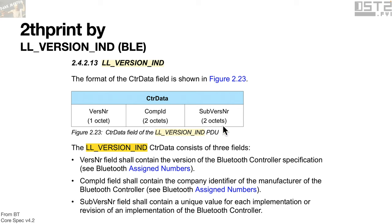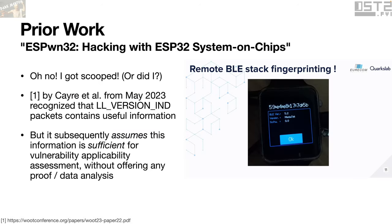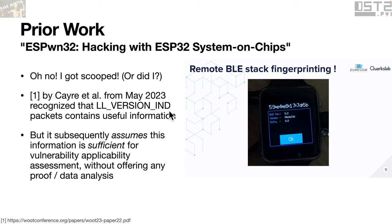When you read the spec, these things seem very interesting from a toothprinting perspective. Back in May of 2023, Care et al. in their Woot paper found they thought it would be super useful to use an LL version indication in the context of BLE to get useful information for BLE stack fingerprinting. The thing is, this was just barely mentioned in the paper — one single slide, one tiny paragraph — they assumed it would work and would be useful for finding whether something is exploitable, without any sort of data analysis or proof. But I've got lots of data, so let's look at some.